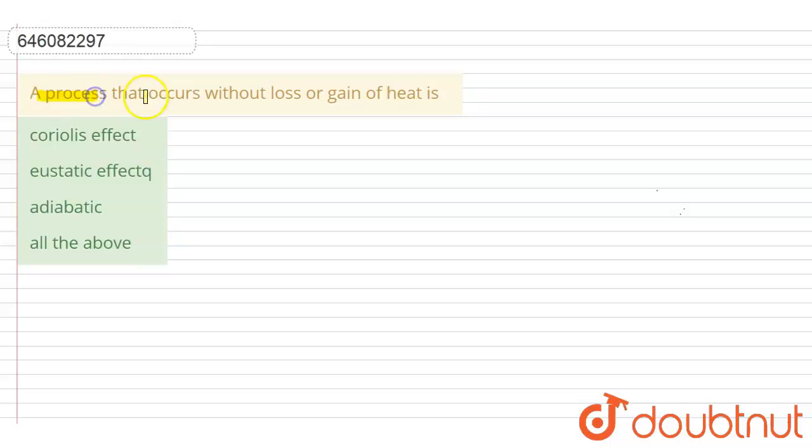A process that occurs without loss or gain of heat is which of these options? The options are coriolis effect, eustatic effect, adiabatic, or all the above. Now the coriolis effect is the pattern of deflection taken by objects not firmly connected to the ground as they travel long distances around the earth.